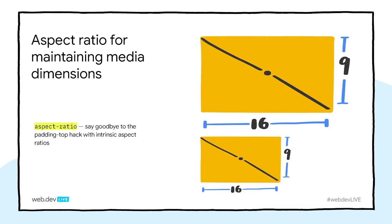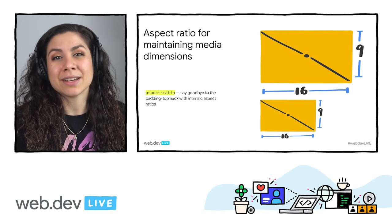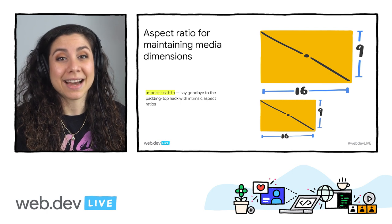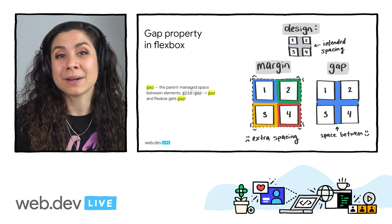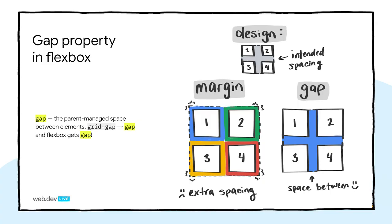There are also some CSS properties coming down the pipeline. Aspect ratio is one of them — it just landed in Chrome Canary and enables users to set defined width-to-height ratios for media items like images and video. Previously the way to do this was a hack using padding and calculating a percentage, but now you can set your ratios in a much more readable way. We're also getting the gap property in Flexbox — this is exciting because it enables the parent element to control spacing between items, not the children, making it easier to style items uniformly within a parent.